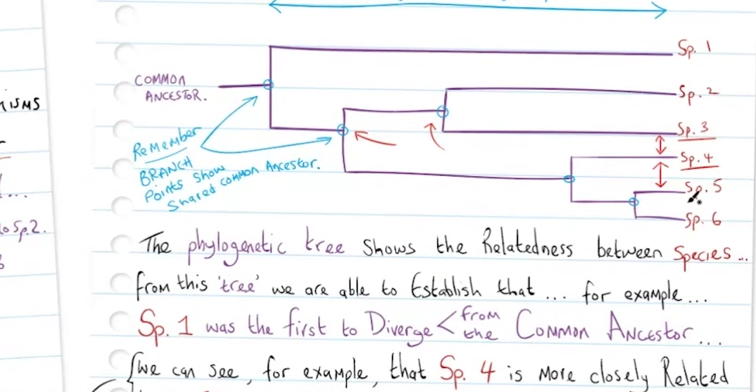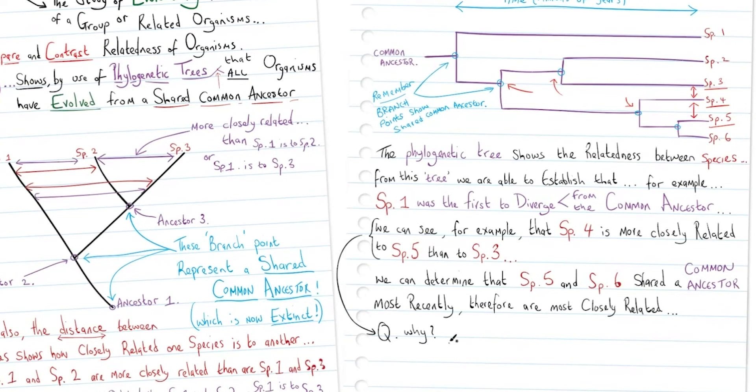That isn't so obvious, so we must also trace back to look at the last shared common ancestor. Then we can ascertain why species 5 is more related to species 4 - it's because they have shared a common ancestor more recently.